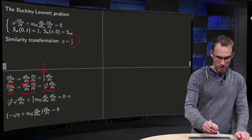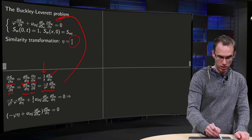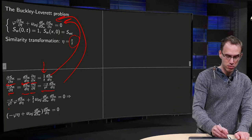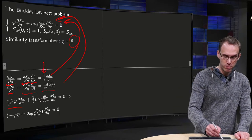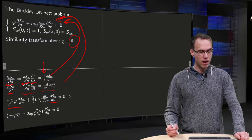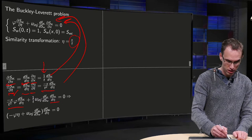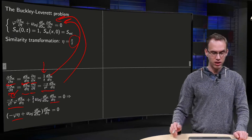Then we plug this into our PDE over here, and we will get an ODE in terms of η. Here the ∂Sw/∂t, the ∂Sw/∂x. Because you can multiply with t and then you are left with minus x over t squared over here, which is exactly an additional η.